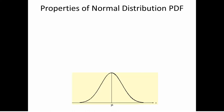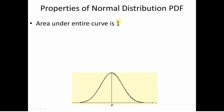There are three properties of the normal distribution probability density function that are very important. You're probably very familiar with the shape of a normal distribution. It's centered around the mean, which we generally denote by mu — the Greek letter for M. The first property is that the area under the entire curve has to be unity.